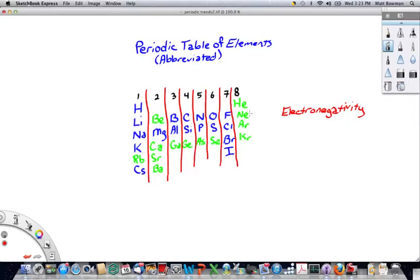Different elements have different electronegativities. In general, as a trend, as you go to the right across a periodic table, electronegativity increases.